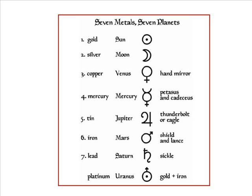Later, elements were given symbols from the planets — the seven metals and the seven planets. Gold was the sun, silver the moon, and so on. You can see that platinum was a combination of gold and iron, and the symbols were a combination. This was getting closer to what chemical formulas might be.